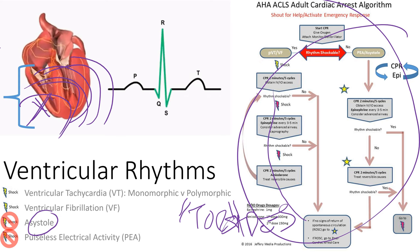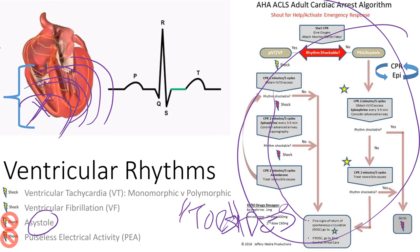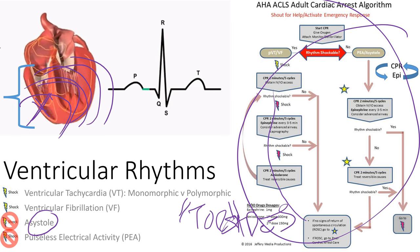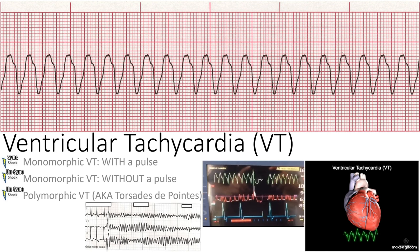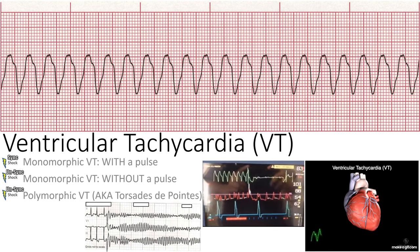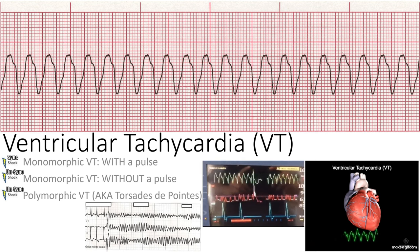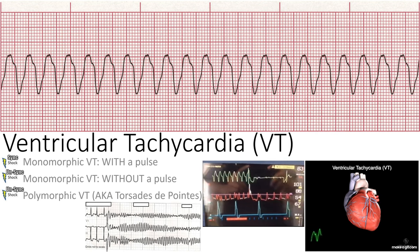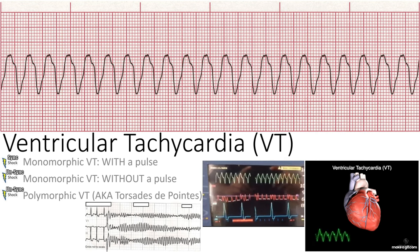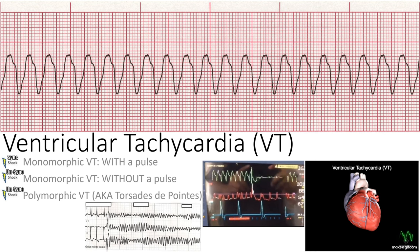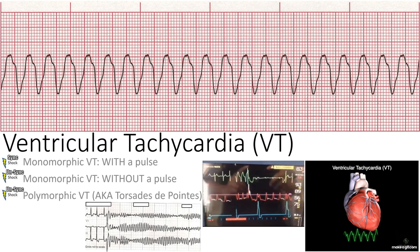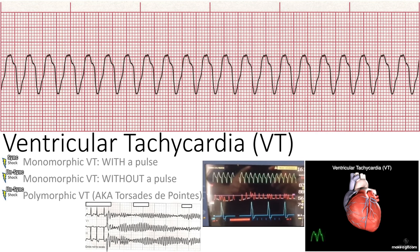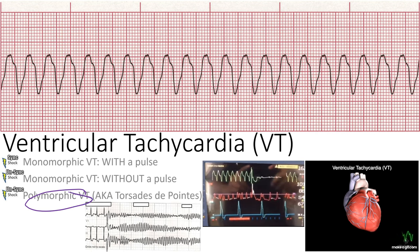For treatment, you might shock the lethal rhythm or you don't shock — that's what differentiates treatment for each ventricular rhythm. VT is a wide complex because it comes from the ventricles. When you have a fast wide rhythm, you always assume it's VT until proven otherwise. We have monomorphic VT — which is regular VT — and polymorphic VT. With VT you can have a pulse or no pulse, and that makes a difference in treatment.